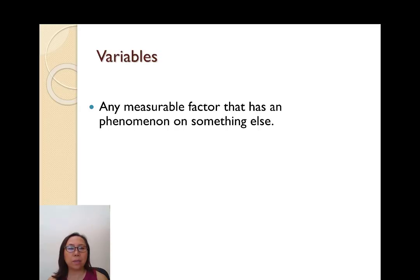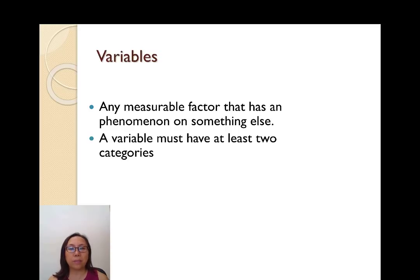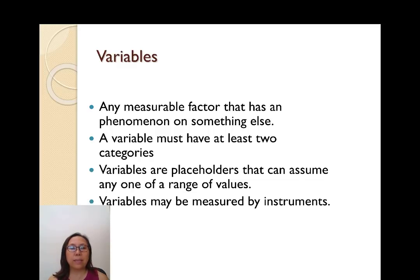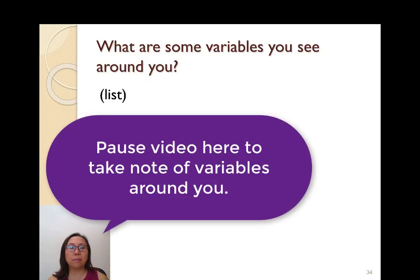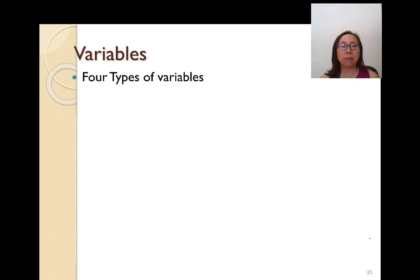You want to define or determine the type of data to collect. Variables are defined as pieces of data — measurable factors that have an effect on a phenomenon. A variable must have at least two categories and are placeholders that can assume any one of a range of values; they may be measured by instruments. Look around you — colors, the temperature of the room, or the number of people around you are all things that can be measured and may have an effect on something else.